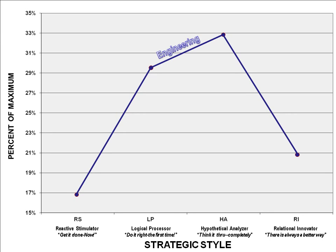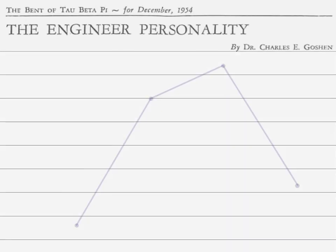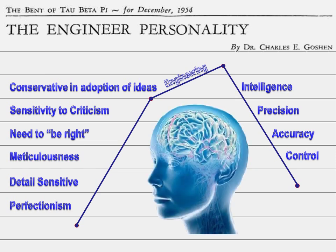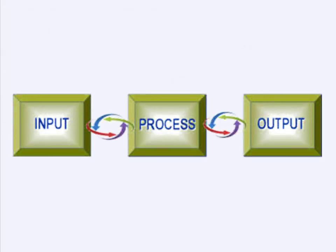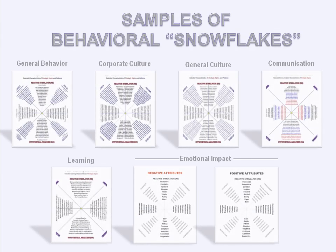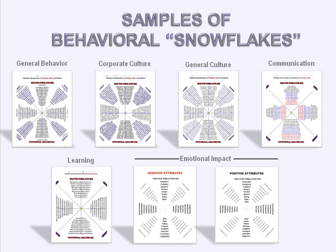The net effect of the skew on the overall profile is to magnify the characteristics of both dominant styles. Both rely on some kind of pre-defined pattern: the HA on pre-defined thought, and the LP on pre-defined action. This creates the common pattern that gives rise to the traits cited by Goshen in 1954. His reasoning is questionable, but the qualities he cites are essentially correct — they are also woefully incomplete. Using the Human Information Processing Model and the Behavioral Cascade, we can construct an unending stream of coherent traits applicable to almost any subject. For example, the IOP website has a large number of snowflakes available free of charge.